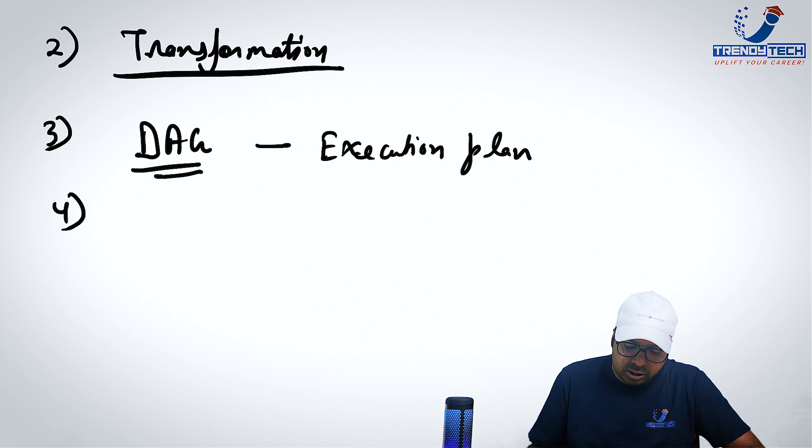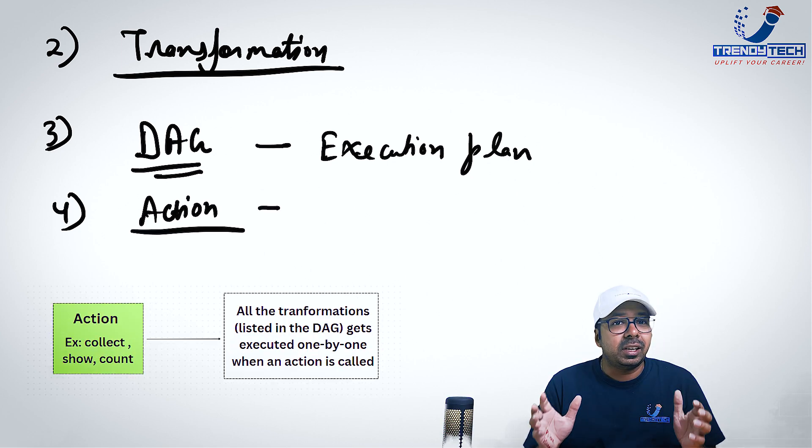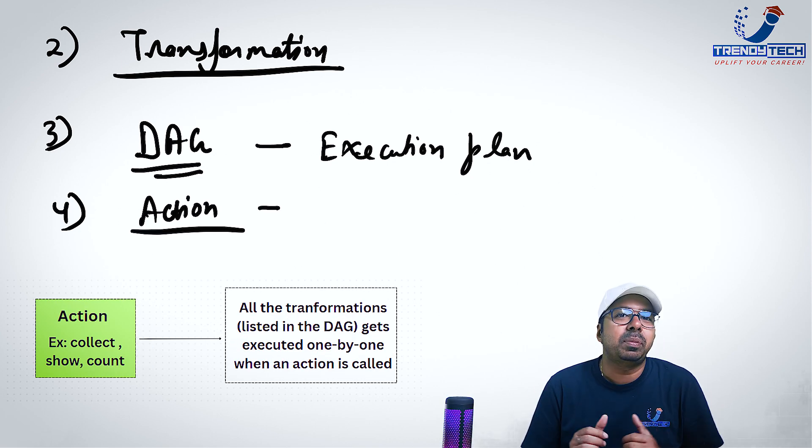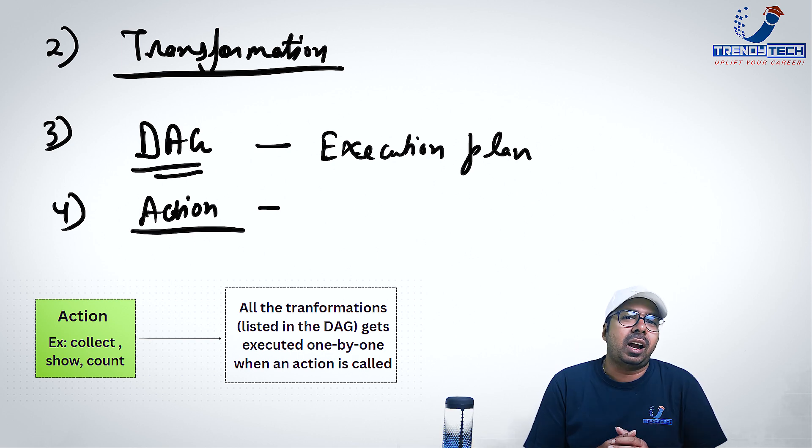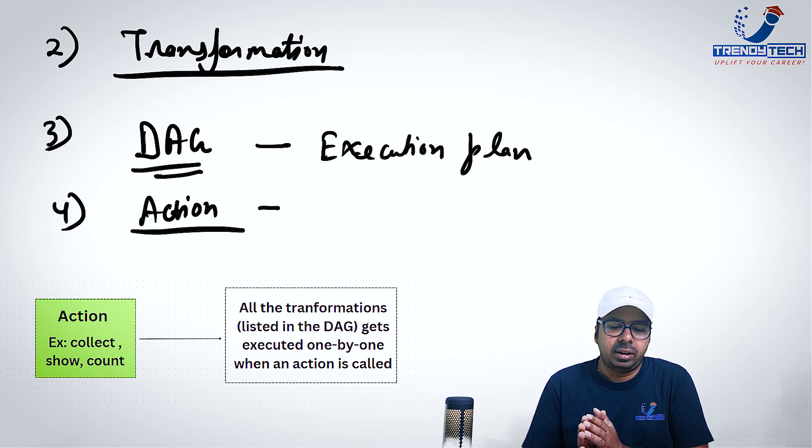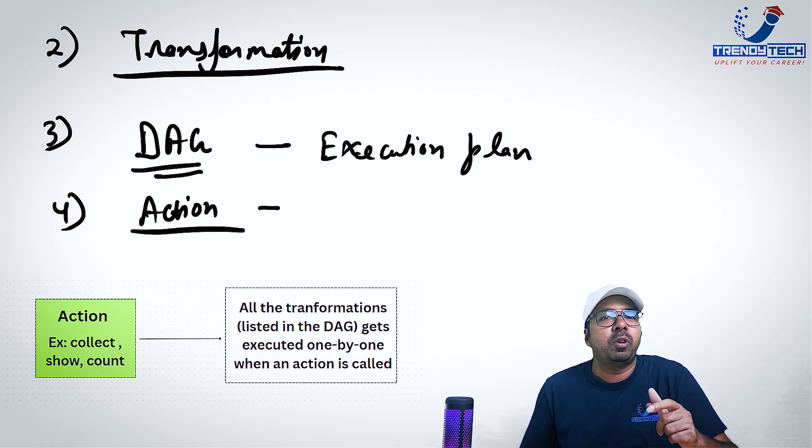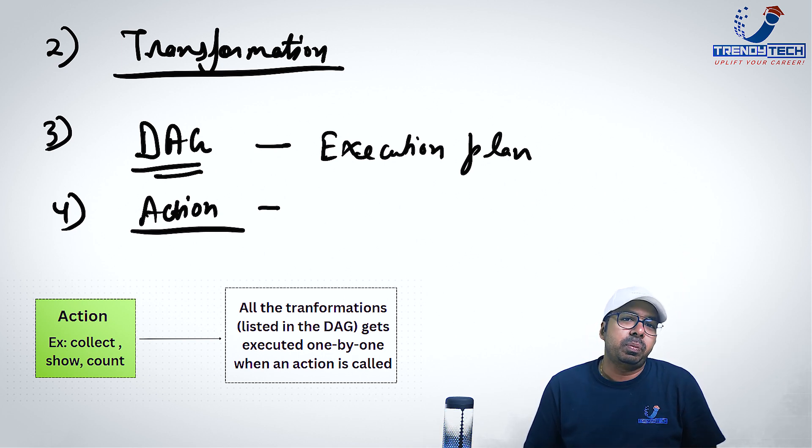Then in my list, the next keyword is what is an action? Action is when we say I want the results now. Please get me the results. So that means at this point, all the calculations start and you get the results. So let's say you have five transformations and then an action. As soon as you call an action, everything starts happening one by one. So action is when you say I want the results. For example, collect, show, all of these are actions. Even count, counting of, let's say, records is an action because it will give you instant results.